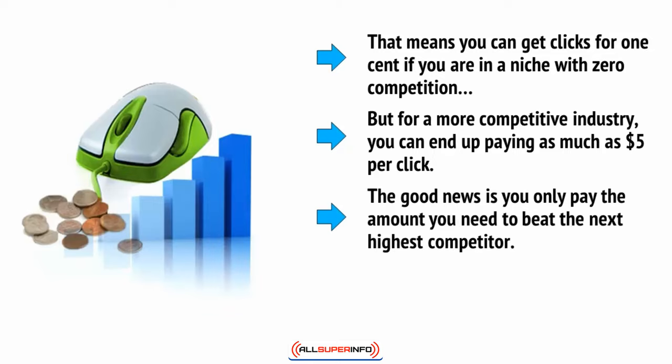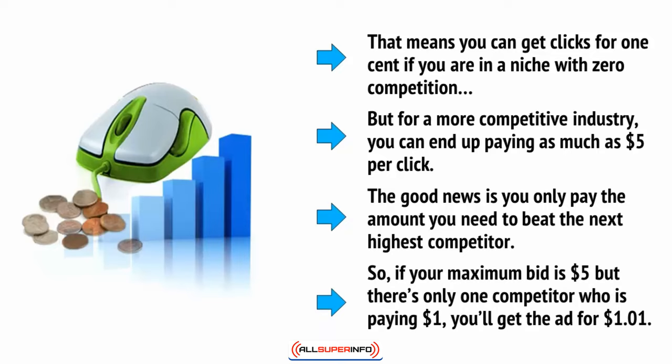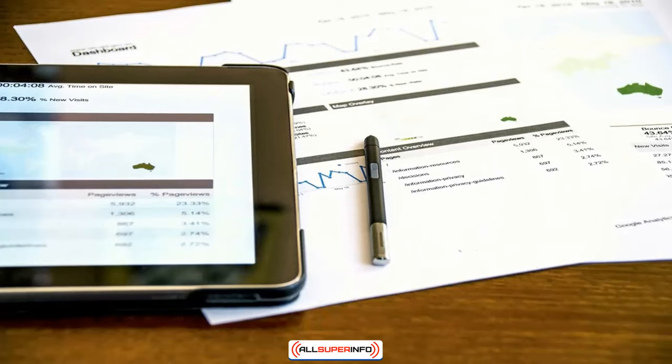The good news is you only pay the amount you need to beat the next highest competition. So if your maximum bid is $5 but there's only one competitor who's paying $1, you'll get the ad for $1.01. As well as setting how much you're willing to pay, which is known as your minimum bid, you can also set how much you're willing to pay per week or per month. This is your budget, and by setting this, you can ensure that you never spend more cash than you have.